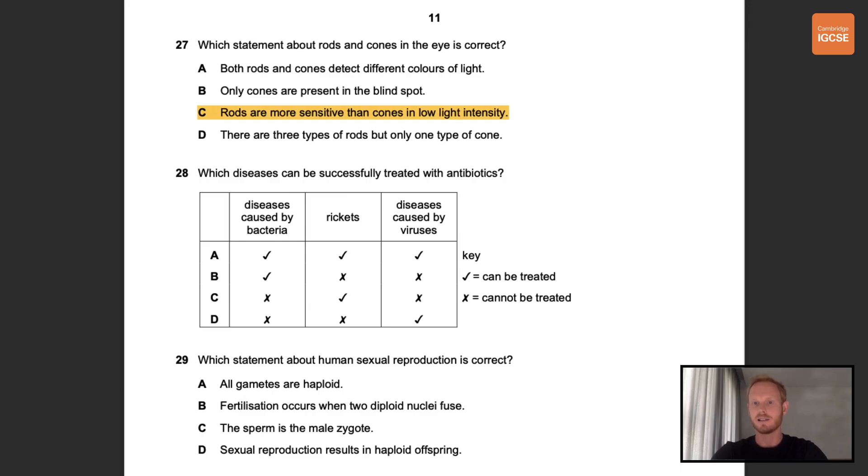Number 28. Which diseases can be successfully treated with antibiotics? So antibiotics are a class of drugs used to treat bacterial infections. Rickets is a vitamin deficiency disease, specifically vitamin C, and viruses are unaffected by antibiotics. So the correct answer here must be B.